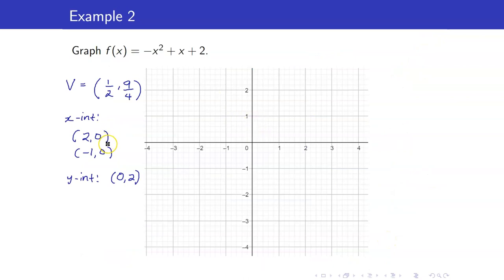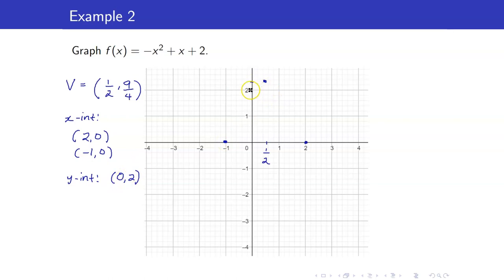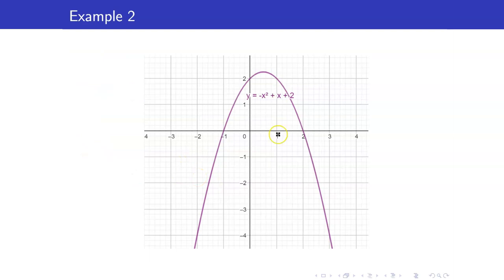Here are the values computed: vertex is (1 half, 9 fourths), which is approximately at x equals 1 half and y equals 2 and one fourth. The x-intercepts are (2, 0) and (negative 1, 0), and the y-intercept is (0, 2). We connect these points to get the downward-opening parabola. Here is the graph drawn using the computer.